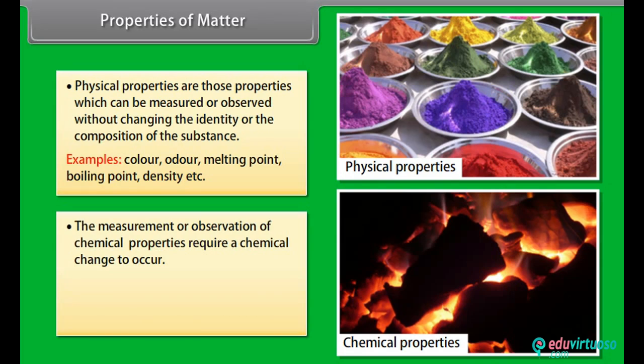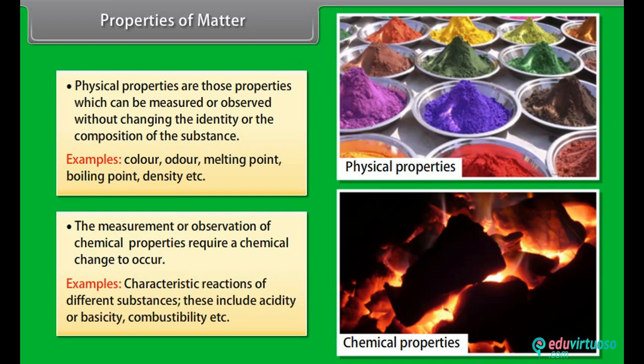The measurement or observation of chemical properties require a chemical change to occur. Examples: Characteristic reactions of different substances. These include acidity or basicity, combustibility, etc.